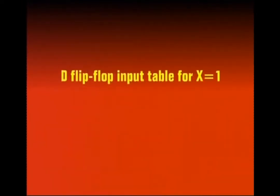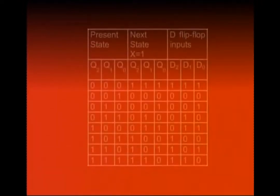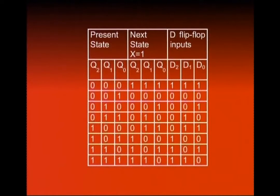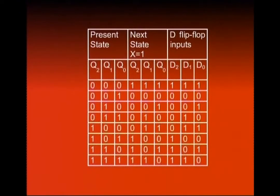Is table mein dekhte hain jab X is equal to 1 — jab X=1 hota hai toh counter down count karta hai. Present state 000 hai, X=1, next state 111 hai — basically down count kiya. Second row: input state 001, X=1, next state 000 — down count kar raha hai. Aakhri state: present state 111, X=1, next state 110. Idhar bhi D flip-flop ke inputs D0, D1, D2 represent karte hain input information jisse Q2, Q1, Q0 pe next state outputs aaenge jab X=1 hoga.